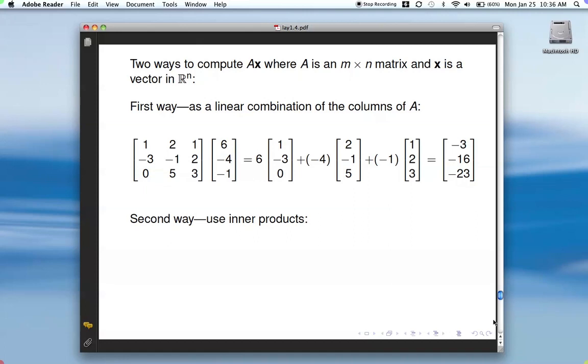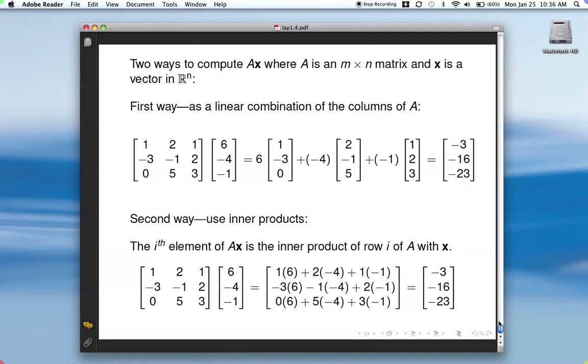Now, the second way, we use inner products, and the i-th element of AX is the inner product of the i-th row of A with X. So, looking at that, to get the first element here, the negative 3, then it's the first row of A, inner product with X. So, that's going to be 1 times 6, plus 2 times negative 4, plus 1 times negative 1, which is what we have here in this first element.